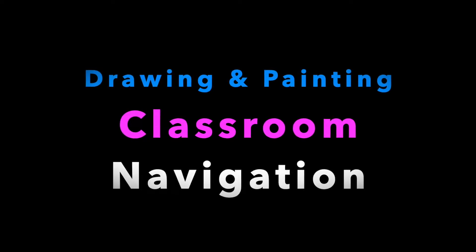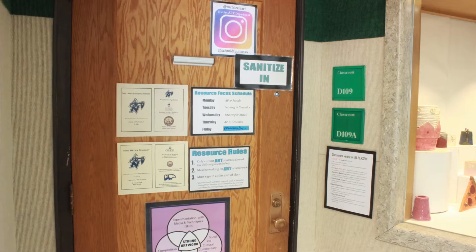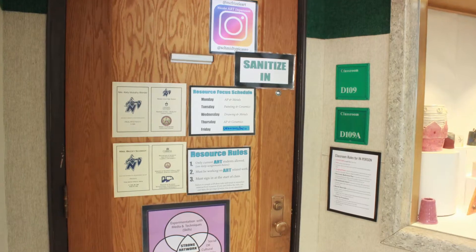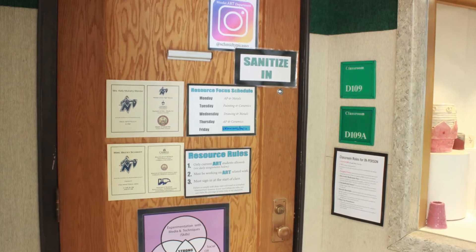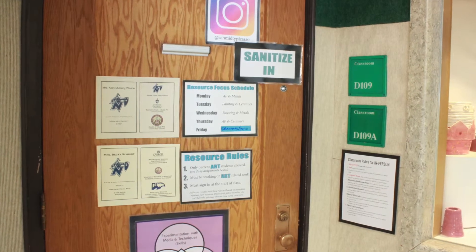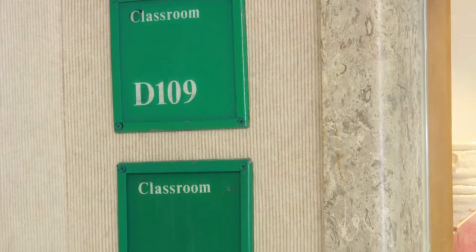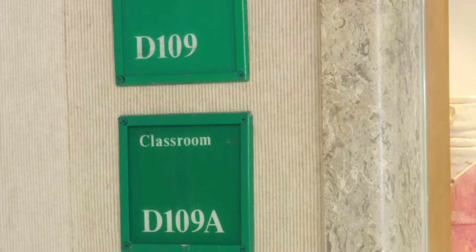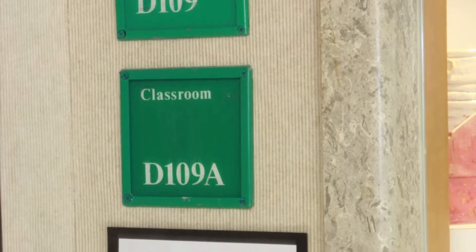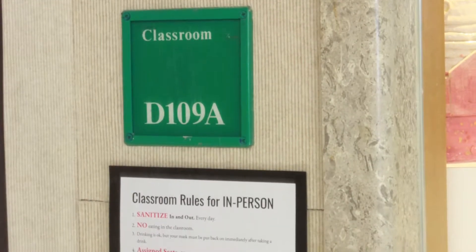This is going to be a video about how to navigate the drawing and painting classroom. The first thing you should notice is that there are two classrooms you can enter when going through this door. D109 is the drawing and painting classroom and D109A is the ceramics classroom.